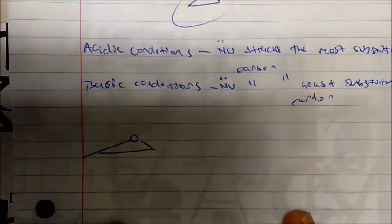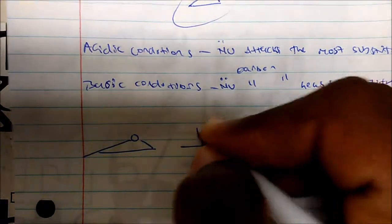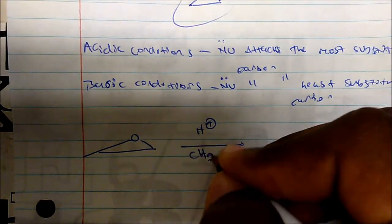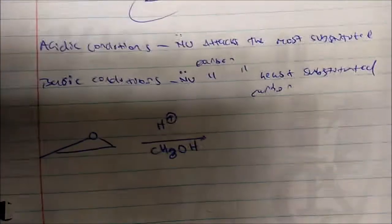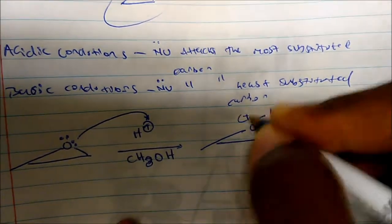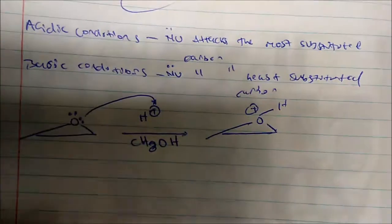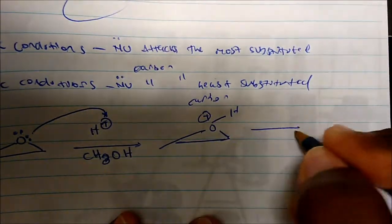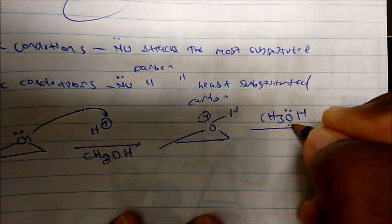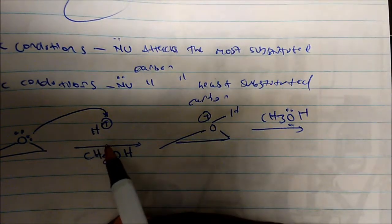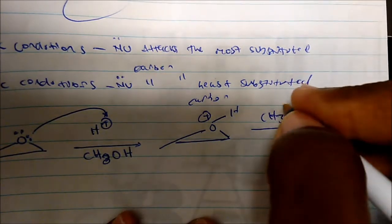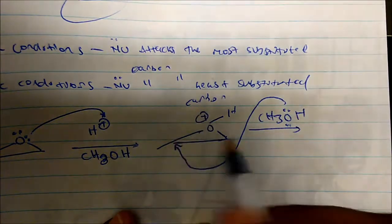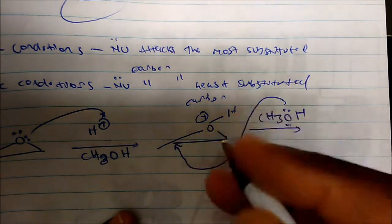Let's look at some examples. What if I'm given this molecule and I add acid and CH3OH (methanol)? What would be the product? The first step is that my oxygen, with its lone pairs, is going to get protonated — oxygen with three bonds gets an automatic +1 formal charge. Now my nucleophile is able to attack. We're in acidic conditions, so the nucleophile will attack the more substituted carbon.